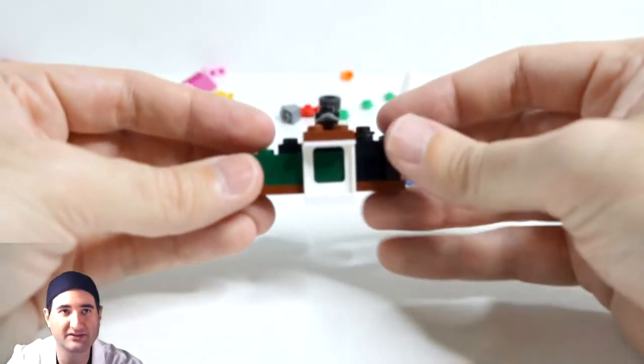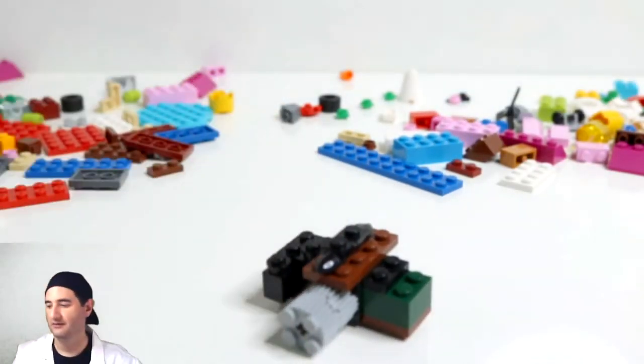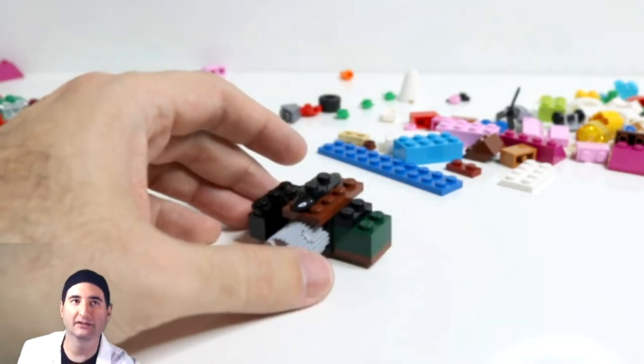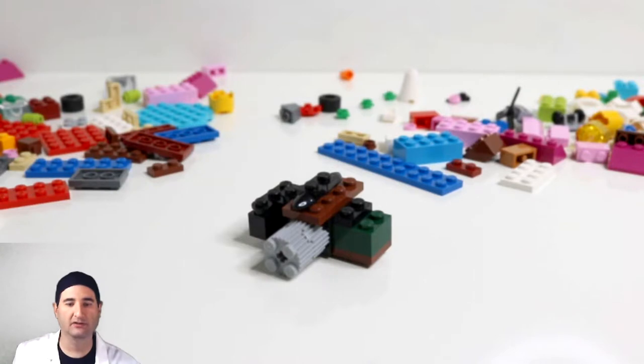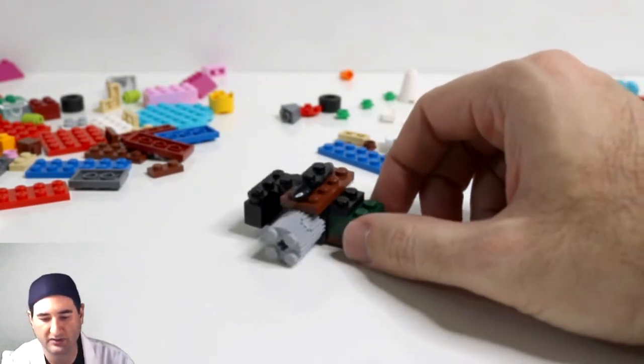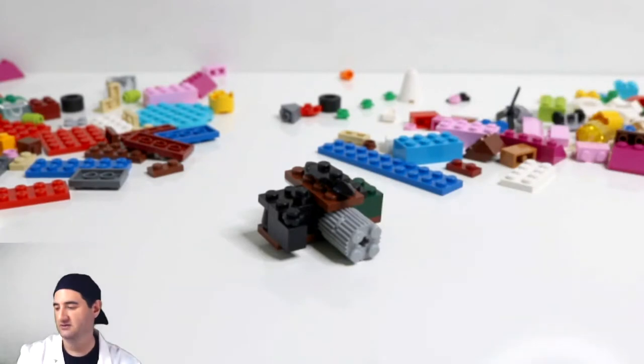We got the lens sticking out, it's got ridges on it so you can turn it. It's got all the features there. I think this is a really great build. It is now almost five minutes and we're gonna stop the clock. That turned out amazingly. I think that's a fantastic build, toy camera. I think it's a real camera. Turned out really good.